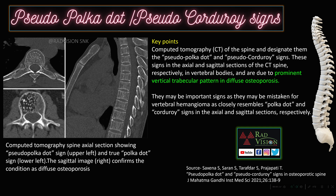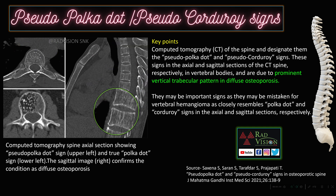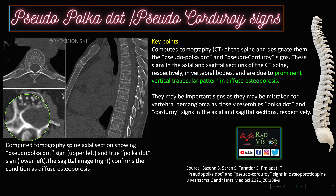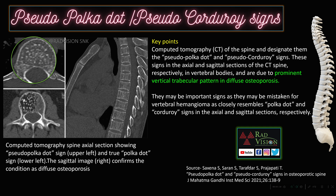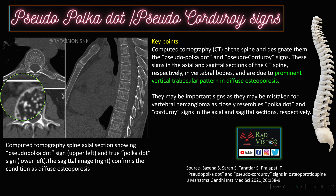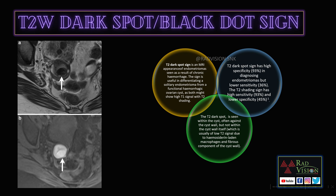Prominent trabeculae are seen in the osteoporotic spine. Compare: this is the pseudo-polka dot sign appearance in case of diffuse osteoporotic spine, and this is the true polka dot appearance seen in case of vertebral intraosseous hemangioma. This is the journal reference from which this information is taken.